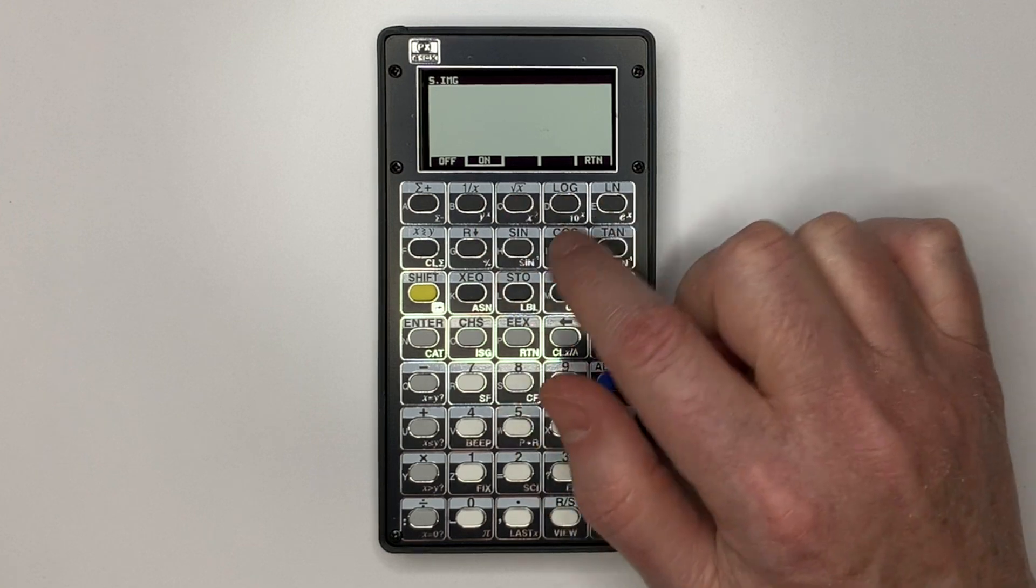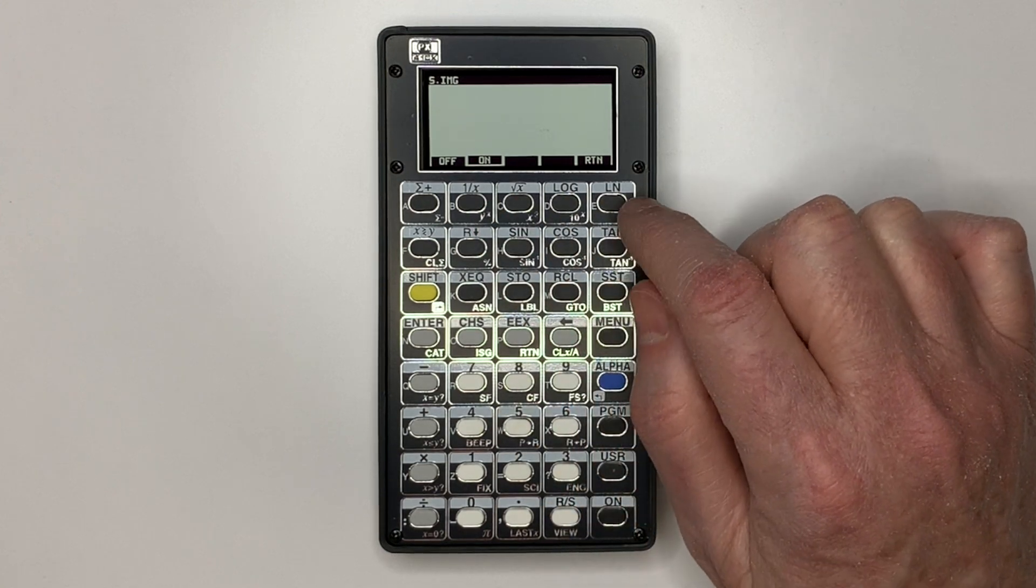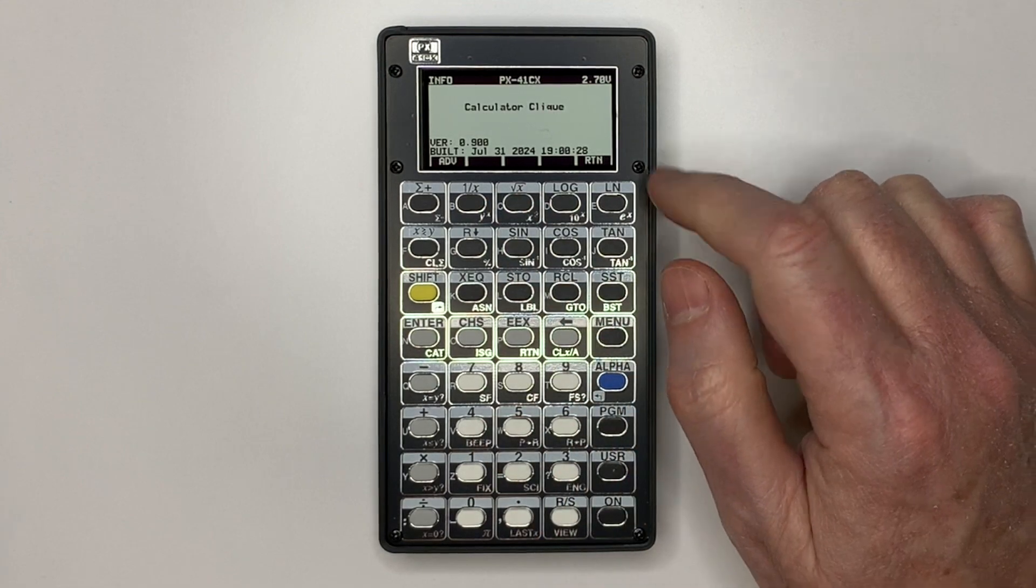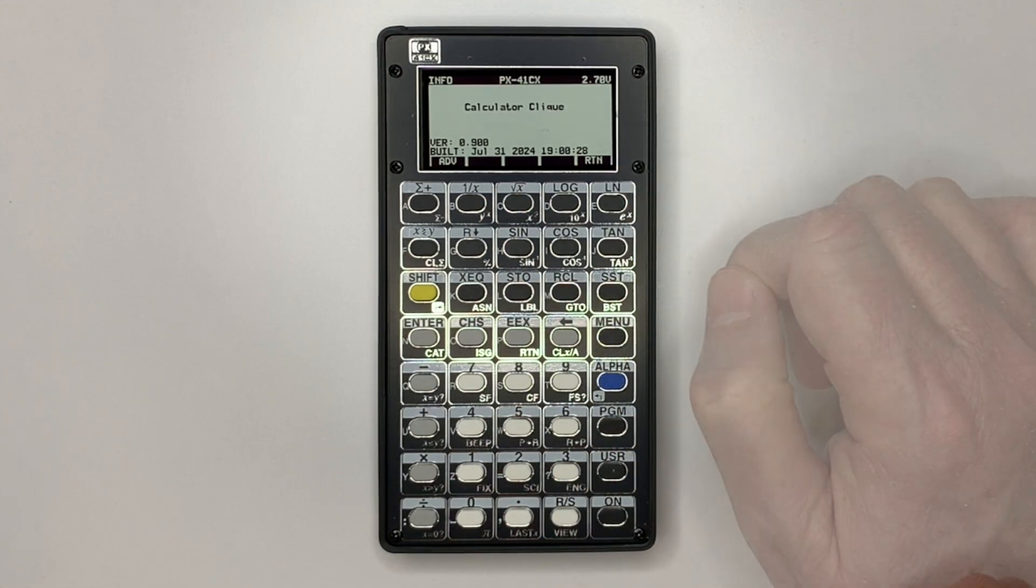You can turn on or off the splash screen on power off. In the info screen, you can see the firmware version details. There are four configurable lines where I've entered my YouTube channel name.